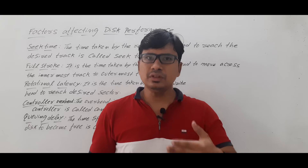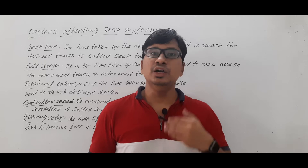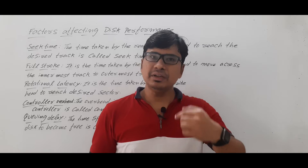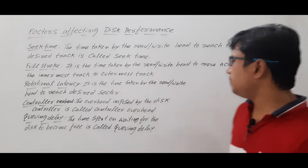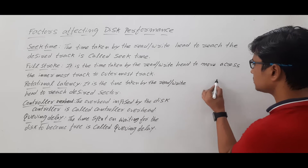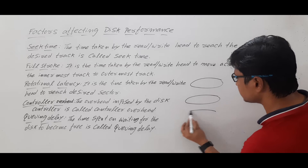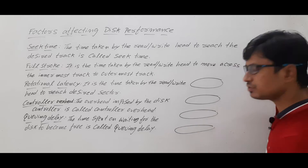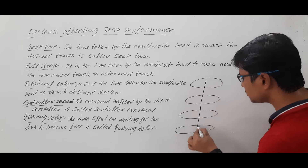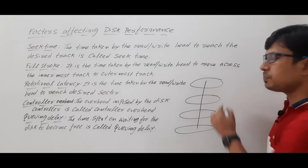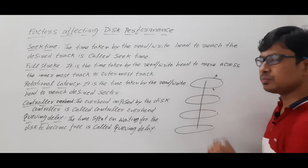To understand factors such as seek time and rotational latency, you should know the magnetic disk architecture. A magnetic disk is a collection of platters, and each platter is of the same size and same capacity. Each platter is connected using one spindle, and each platter has two surfaces — one top surface and one bottom surface.